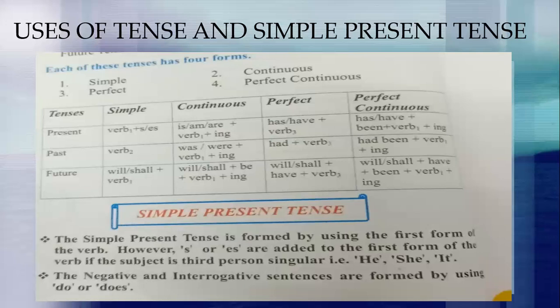Now let us move to past tense — means the work is already done. In simple past you use the simple verb. In continuous past you add 'was' or 'were' plus verb plus 'ing', because the tense is already completed. In perfect past you use 'had'. In perfect continuous past you use 'had' plus 'been' plus verb plus 'ing'.